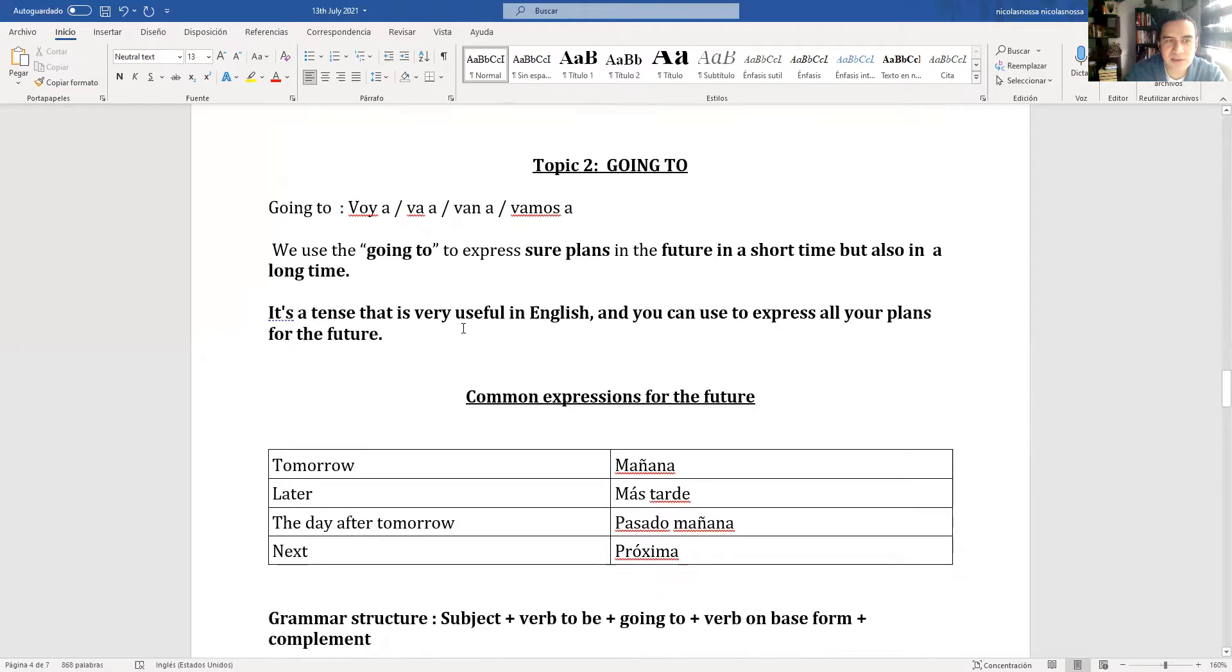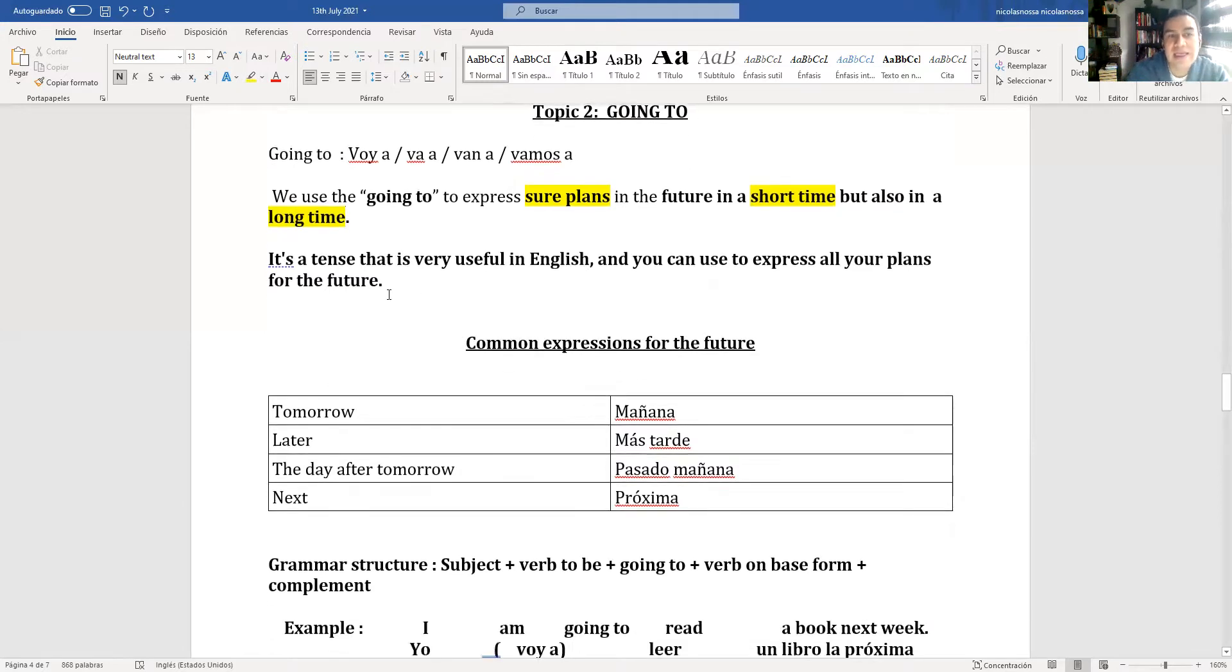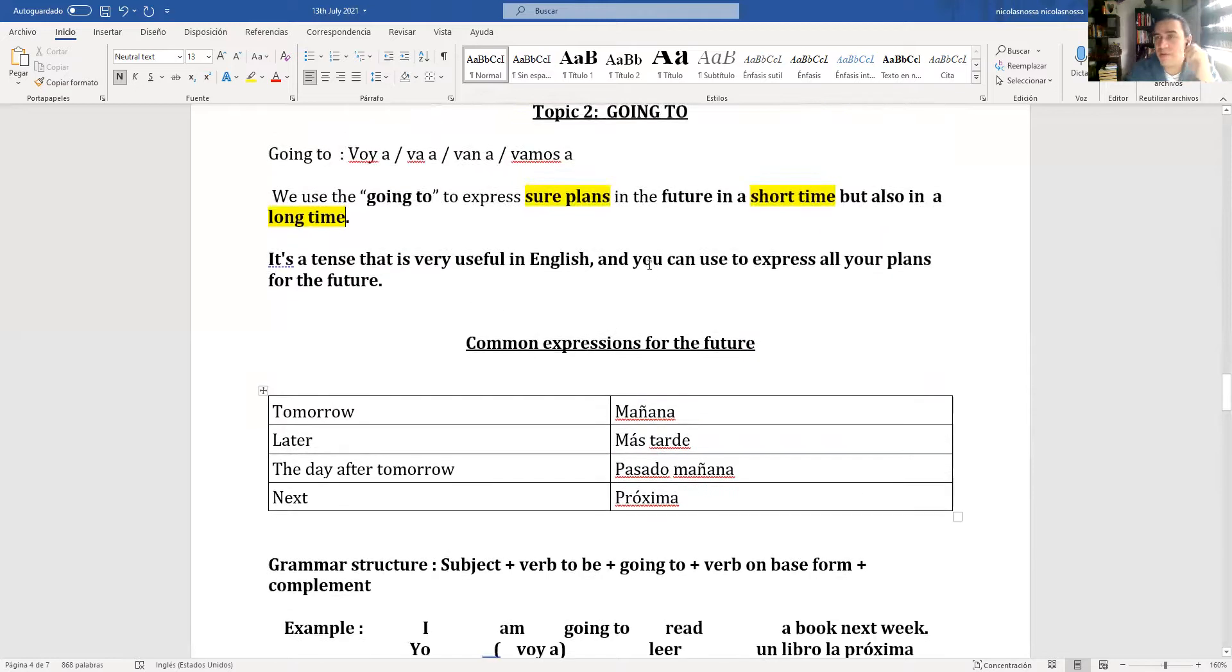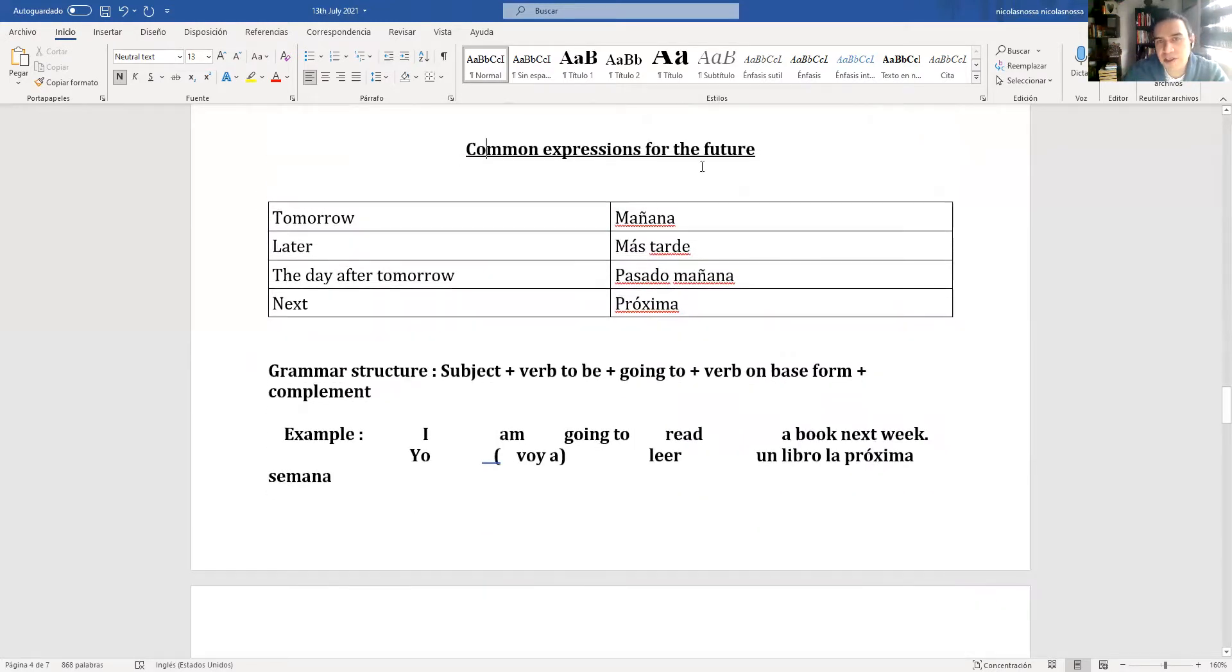We use going to to express sure plans in the future in a short time, but also in a long time. This tense is very useful in English. You can express all the plans for the future. I say, for example, we are going to see the class, I am going to explain the activity. I am using all the time in my speech.